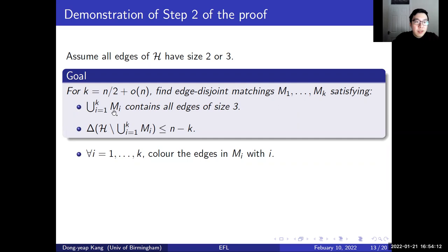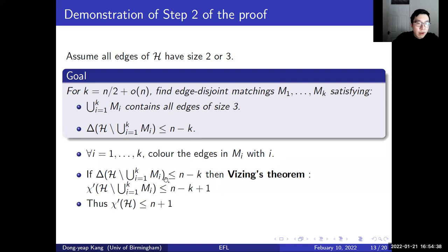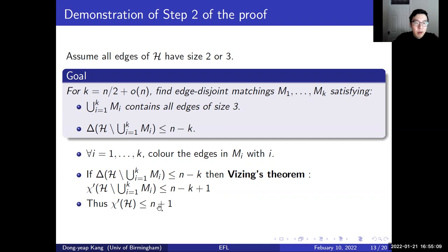In our proof, we try to find k many edge-disjoint matchings M₁ through Mₖ, where k is roughly n/2, such that the union of the edges contains all edges of size 3, and the leftover graph after deleting the union of the matchings has maximum degree at most n minus k. If we can find such matchings, we color matching i with color i. If the maximum degree of the leftover graph is n minus k, then by Vizing's theorem we can color the leftover graph with at most n minus k plus 1 colors, giving chromatic index at most n plus 1. We can then analyze the structure of the leftover graph to reduce the chromatic index from n plus 1 to n.